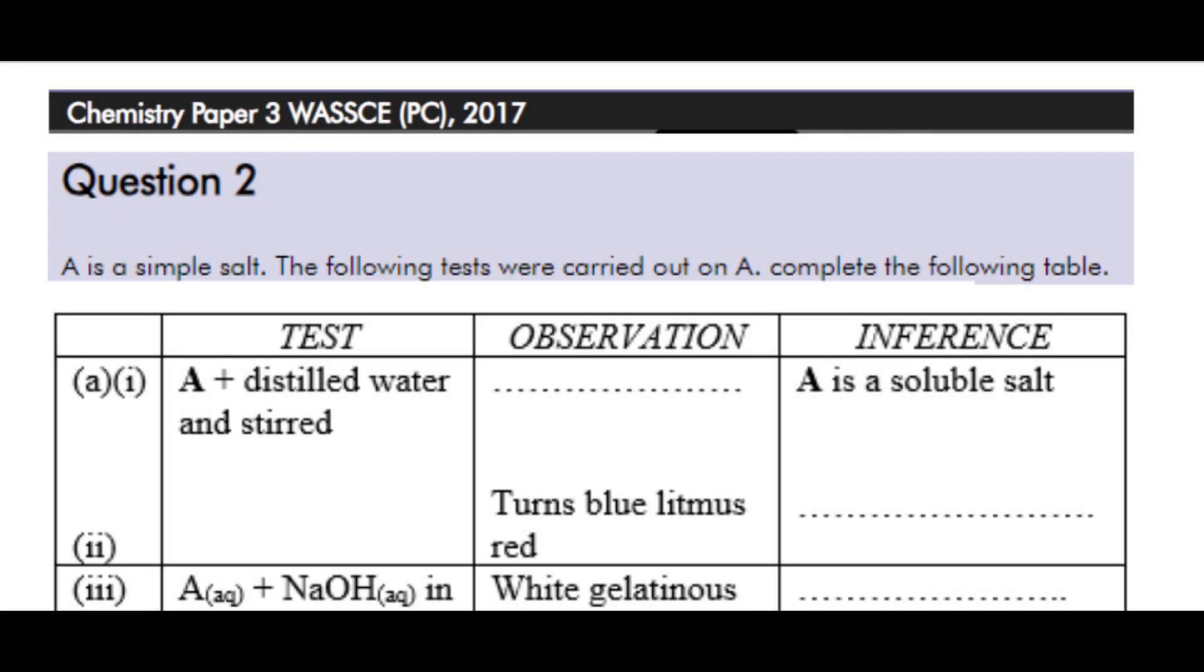Question 2. A is a simple salt. The following tests were carried out on A. Complete the following table. Test, observation and inference. Test AI: A plus distilled water and stirred. We are required to give the observation and the inference is A is a soluble salt.